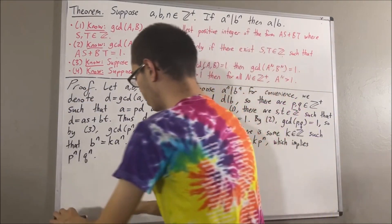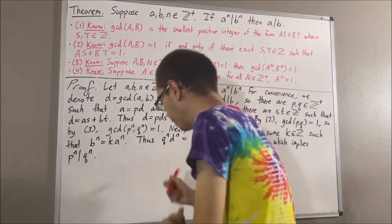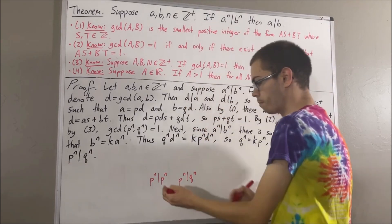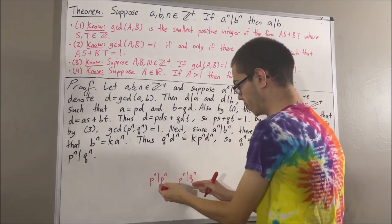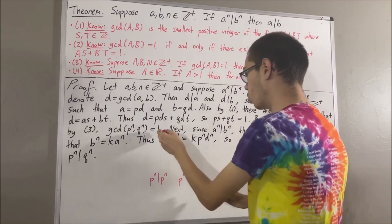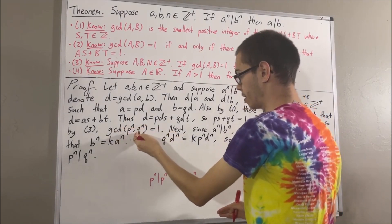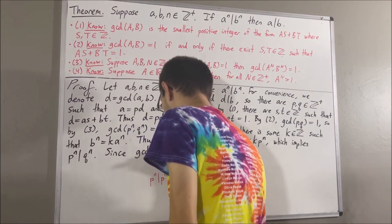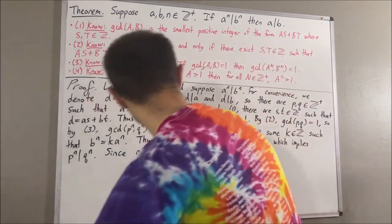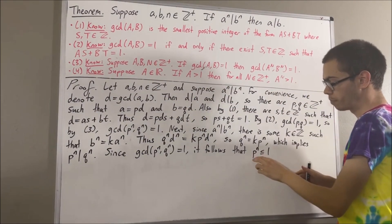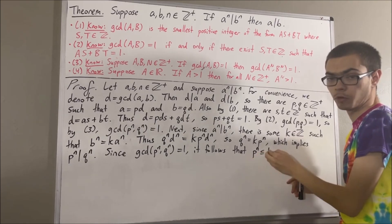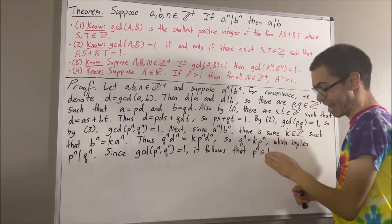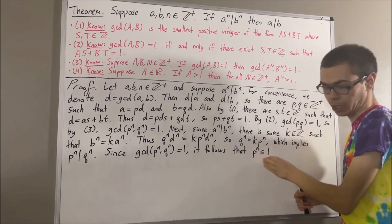Now, notice that p to the n is a divisor of itself, and p to the n is a divisor of q to the n. So p to the n is a common divisor of p to the n and q to the n. But since 1 is the greatest common divisor of p to the n and q to the n, 1 must be greater than or equal to p to the n. And since p to the n is a positive integer, p to the n must be greater than or equal to 1. So, since p to the n is both greater than or equal to 1 and less than or equal to 1, p to the n must equal 1.